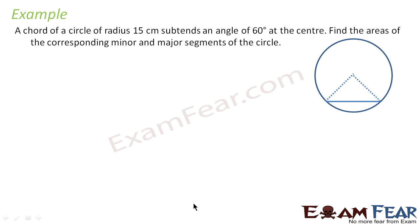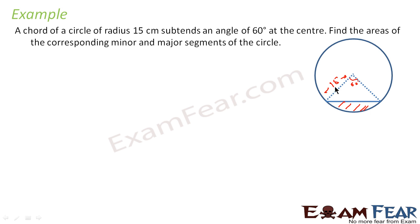Let's take one more example. A chord of a circle of radius 15 cm subtends 60 degrees at the center. We need to find the area of the corresponding minor and major segments of the circle. This question is similar to the last one. We have to find the area of the minor segment and the major segment.